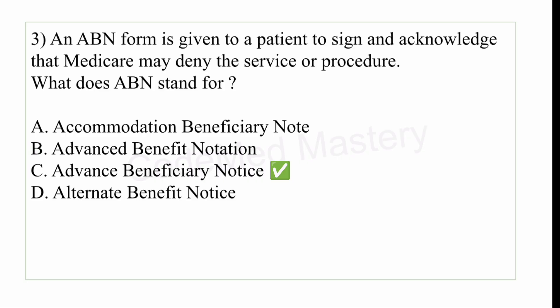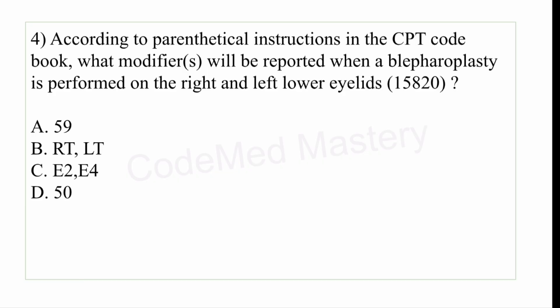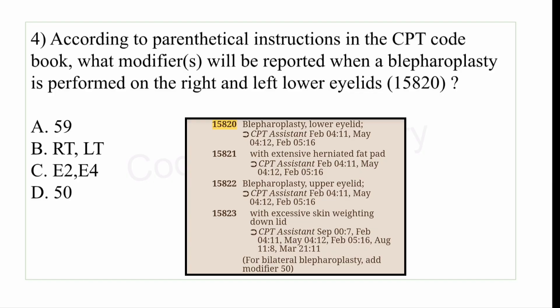Next question: according to parenthetical instructions in the CPT code book, what modifier will be reported when a blepharoplasty is performed on the right and left lower eyelids? We'll check code 15820 — blepharoplasty, lower eyelid. Since the question specifies right and left lower eyelids, it is bilateral. Below code 15823, the parenthetical note states: for bilateral blepharoplasty, add modifier 50. Therefore the right answer is option D, modifier 50. Highlight that parenthetical note.